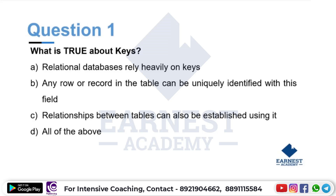Any rows or records in the table can be uniquely identified using a key field. Relationships between tables can be established using it. The answer is 'all of the above' — a key can uniquely identify any row or record in the table.